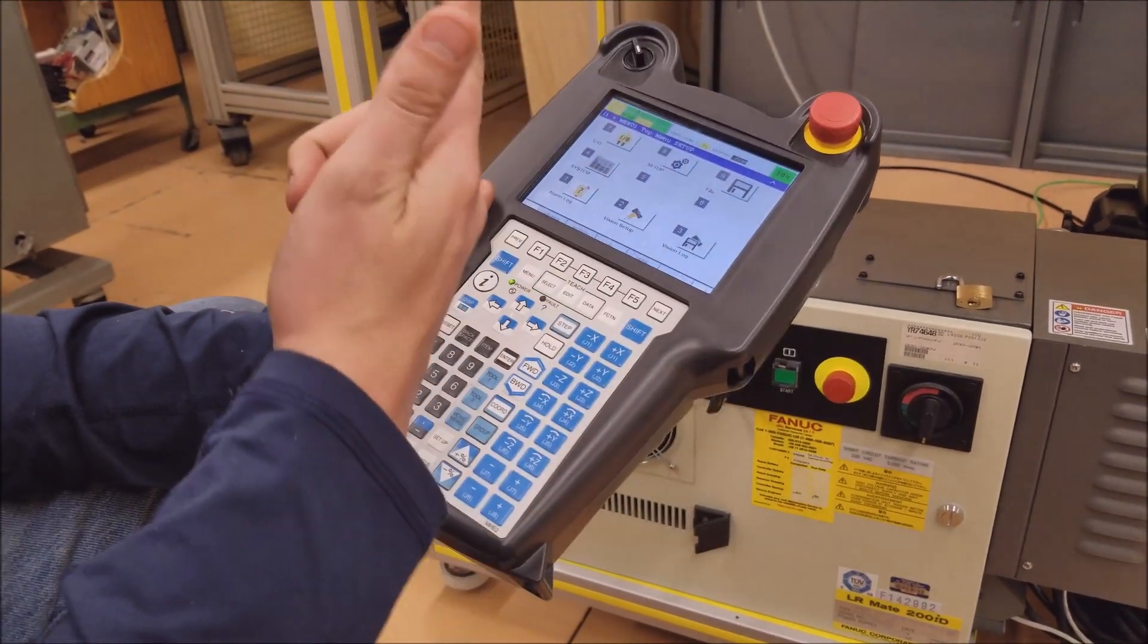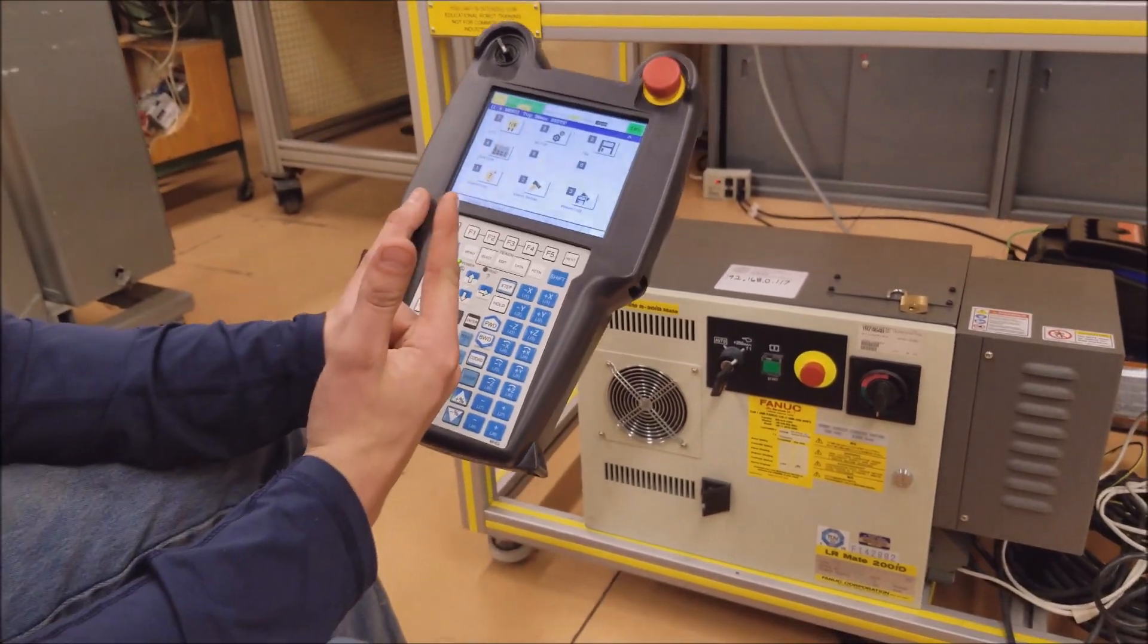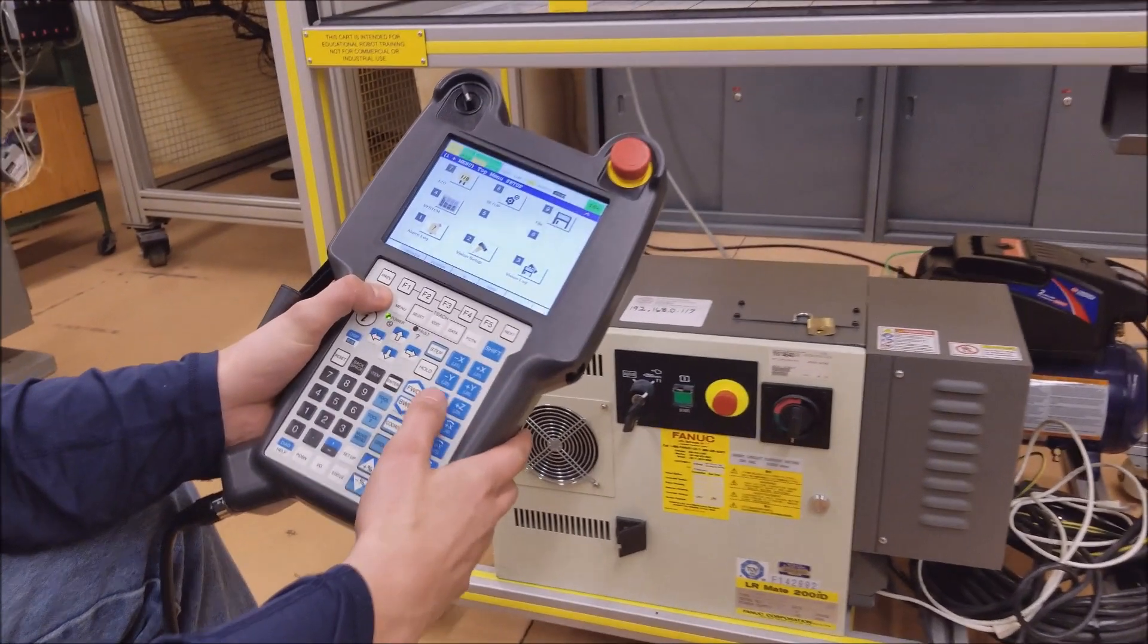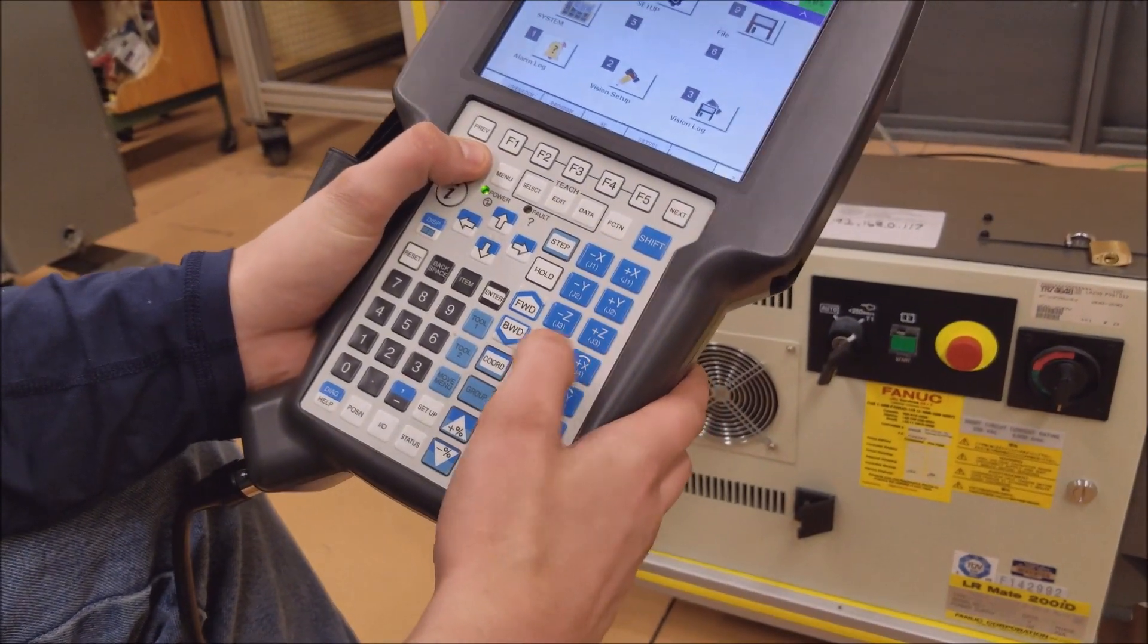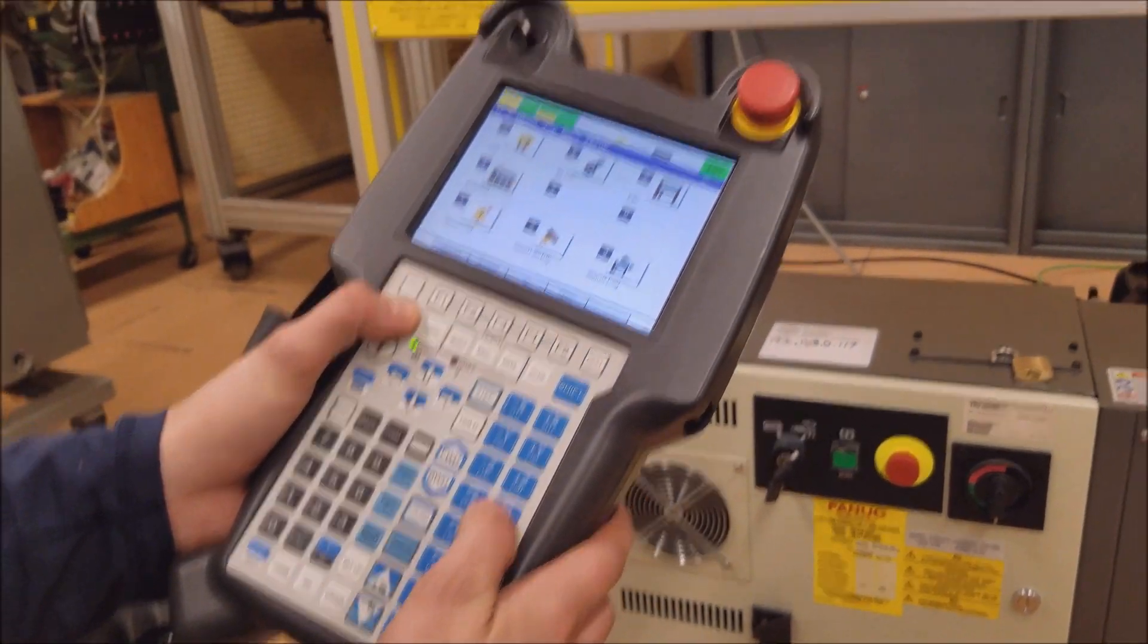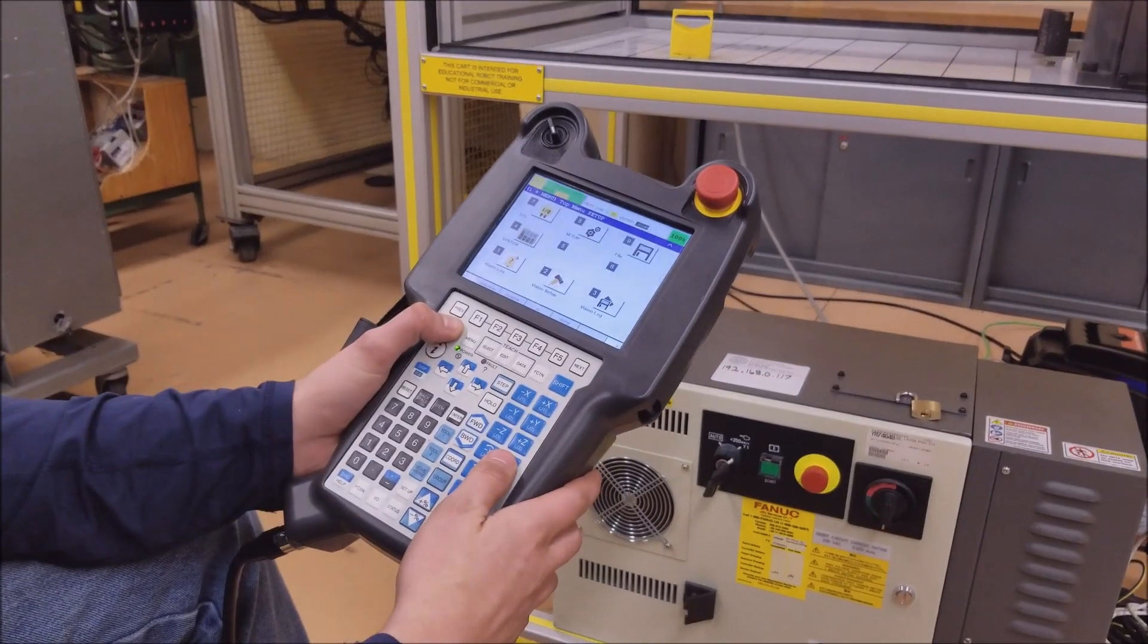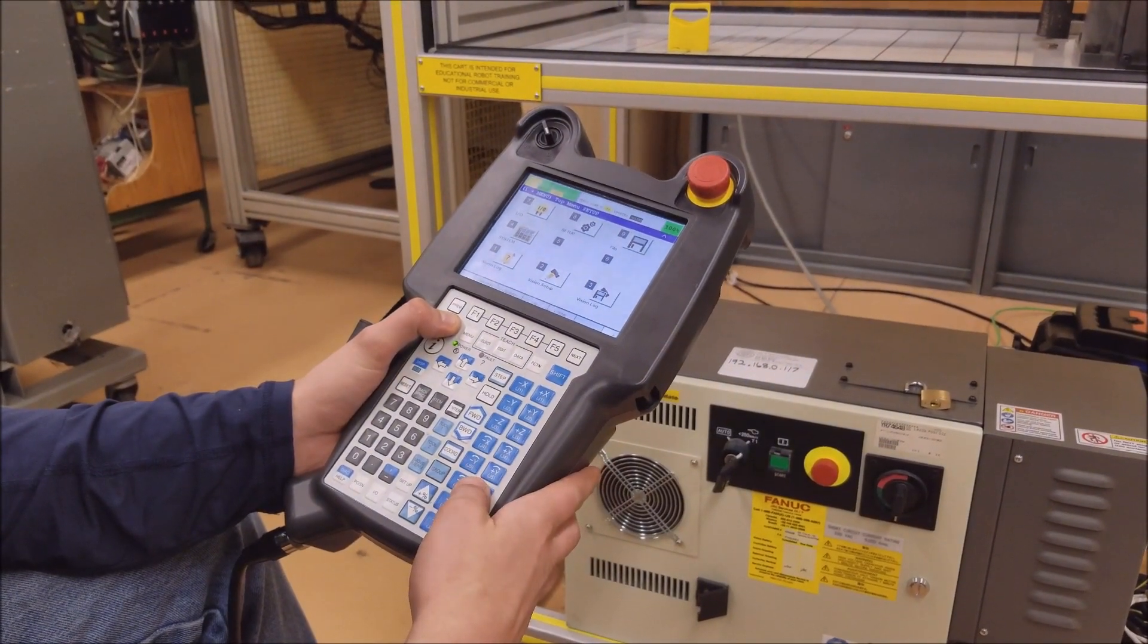And then to move the robot itself, what we have to do is hold one of the shift buttons on either side, and then we can hit the different buttons, the X, Y, and Z axes to make it move. I'll up the speed here so we can actually see it. As you can see, the robot's moving.